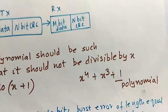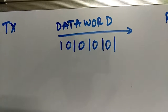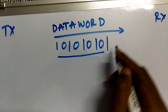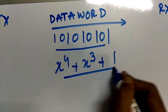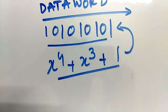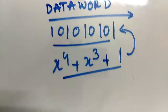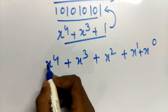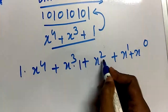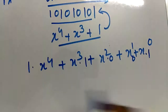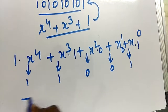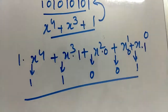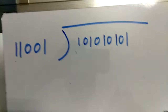Now let's work through an example. Suppose we want to send a data word to the receiver. We will calculate the CRC for it using a given polynomial. Before calculating, we need to convert the polynomial into binary form. The polynomial can be written with coefficients 1, 1, 0, 0, 1 — so the binary value is 11001, which we use for the polynomial division.